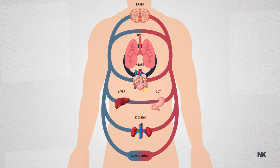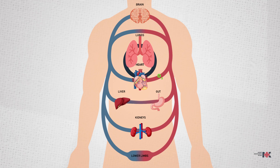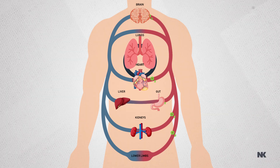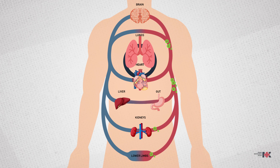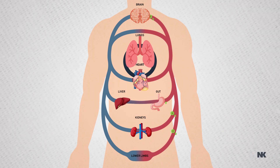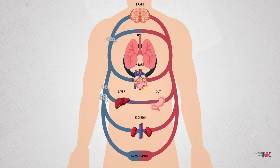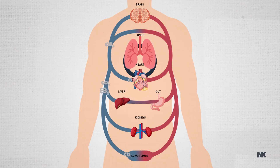Then we have the systemic circuit. This carries oxygenated blood away from your heart, takes it to the rest of your body, and oxygen is delivered to your tissues, joints, and bones. It then returns this deoxygenated blood to your heart.